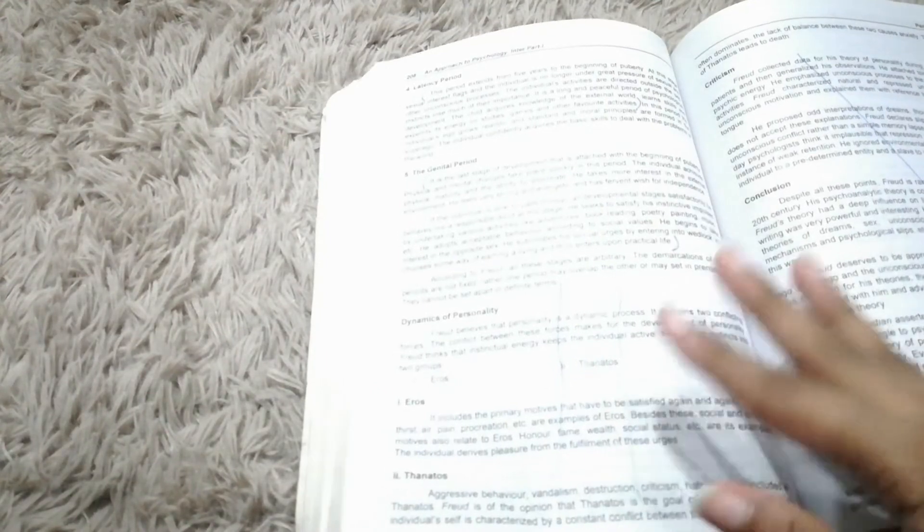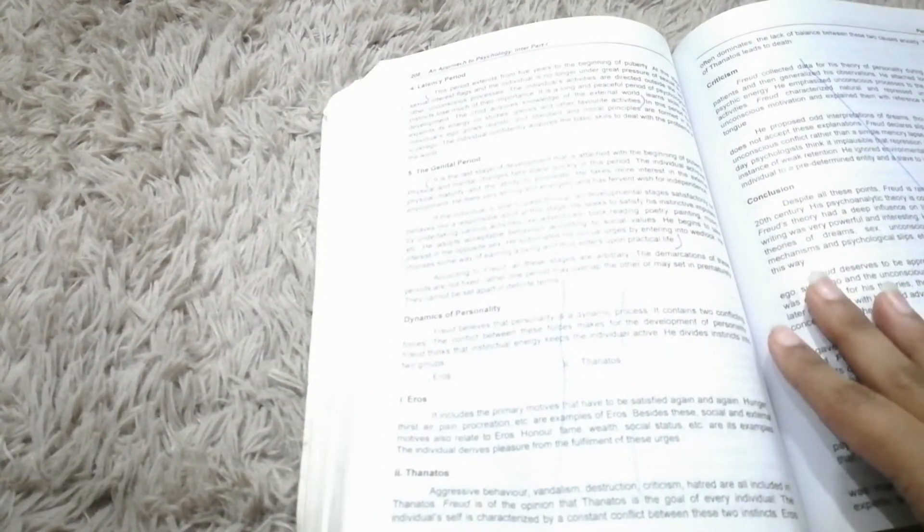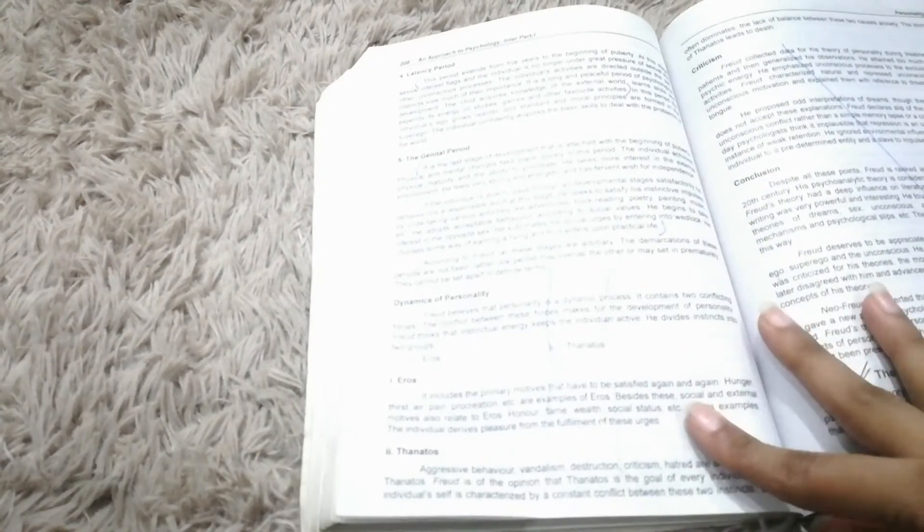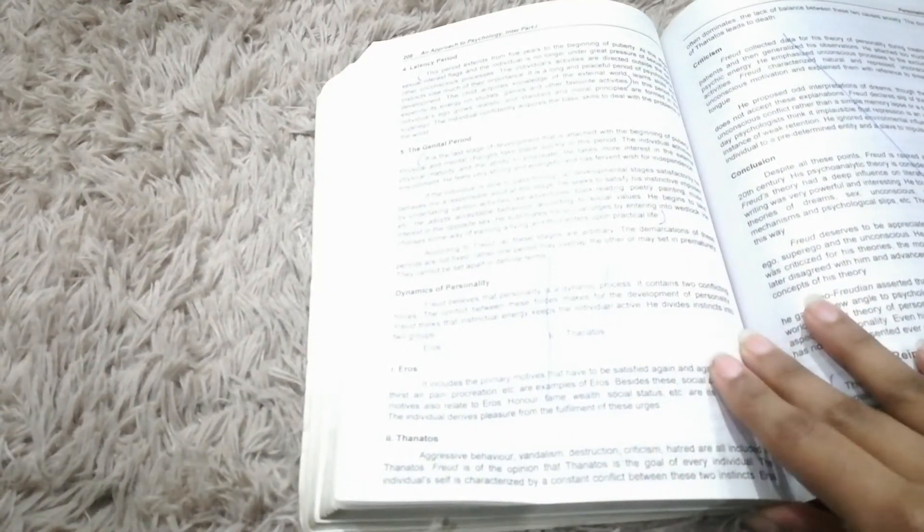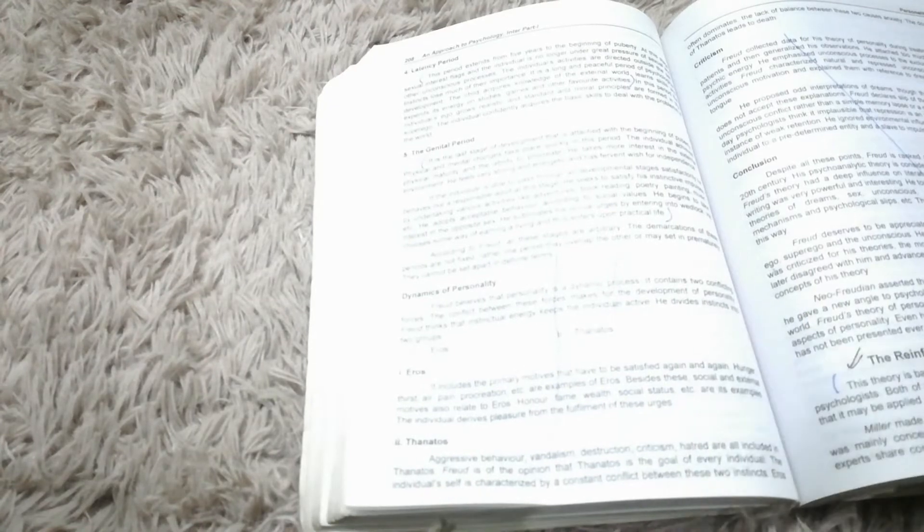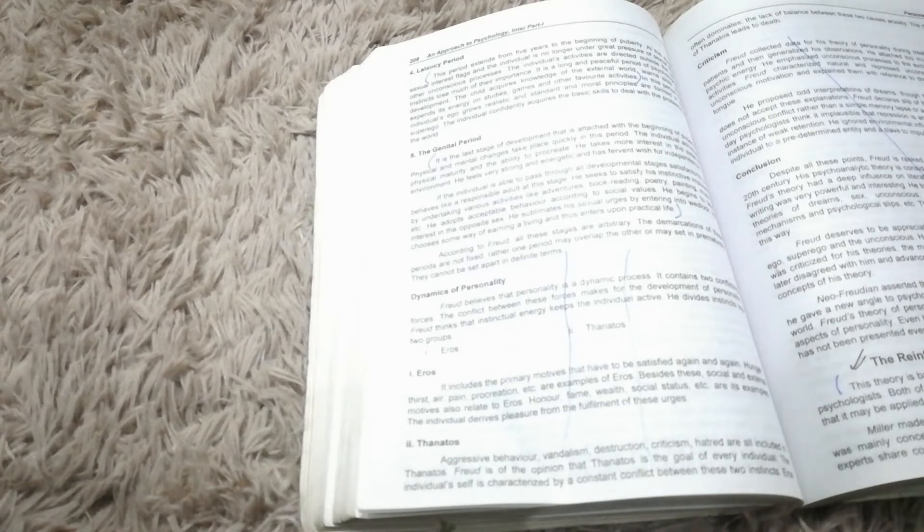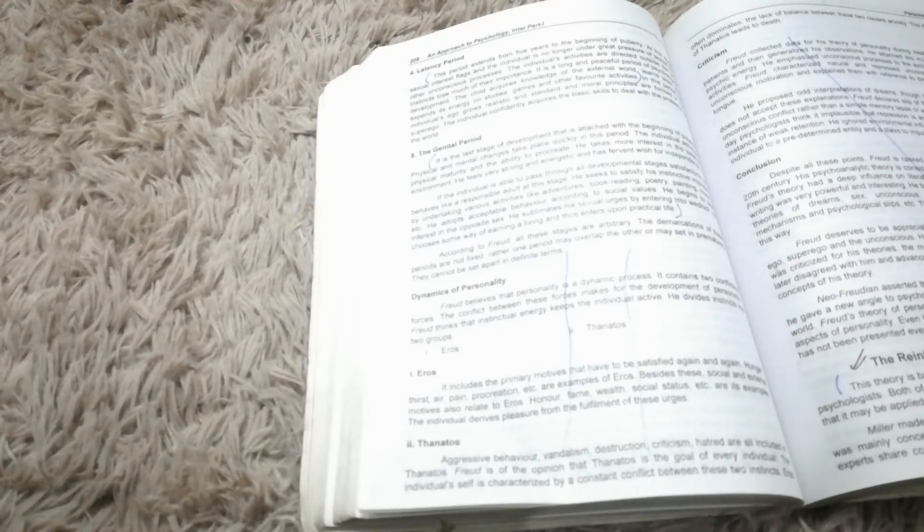This is very long paragraph. You don't need to read it and write it. Dynamic personality: Eros, Thanatos. What is Criticism? If you ask what is, you can explain 2-3 lines or 2-3 points.